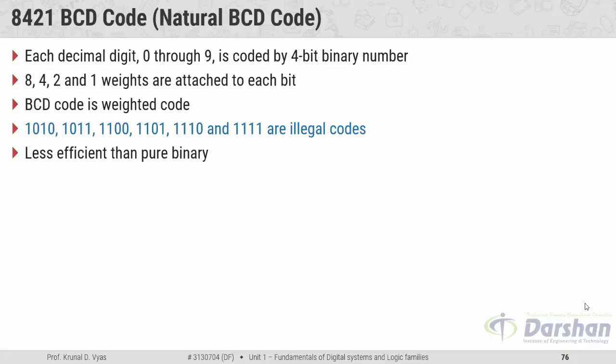BCD code is less efficient than pure binary. For example, if you convert decimal digit 1 into binary you get just 1, but if you convert decimal digit 1 into BCD — binary coded decimal — you need to pad three zeros in front, giving 0001, because BCD is a 4-bit code. So the space utilized by BCD code is greater than space utilized by pure binary, which is why it is less efficient.